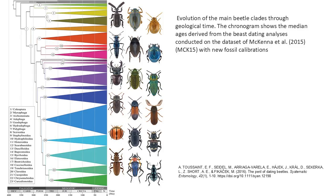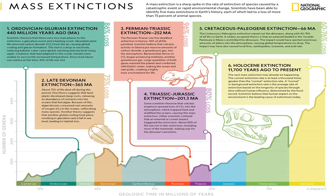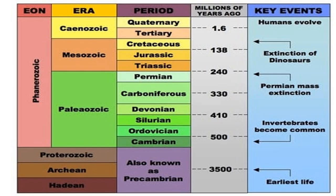The earliest members of the modern beetle lineages appear during the late Permian. In the Permian-Triassic extinction event, at the end of the Permian period, most Proto-Coleopteran lineages became extinct. Beetle diversity did not recover to pre-extinction levels until the Middle Triassic.